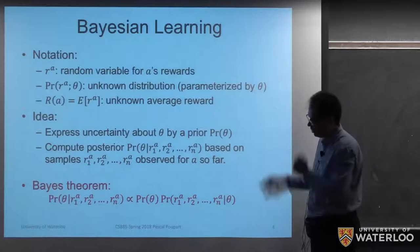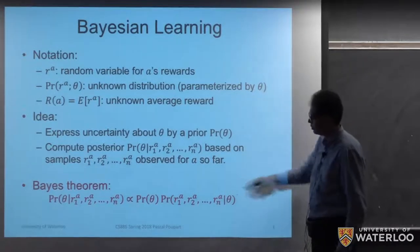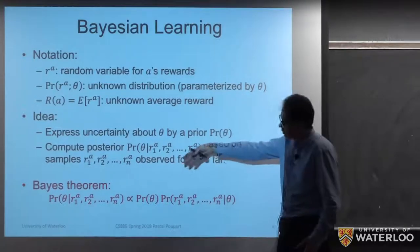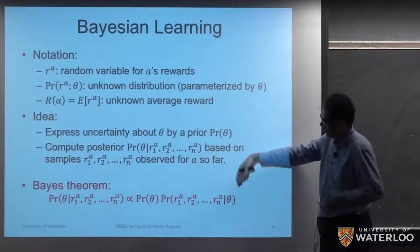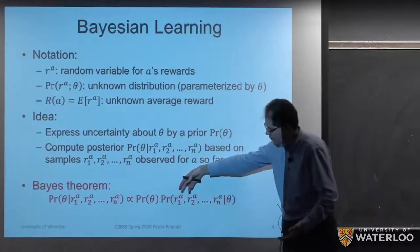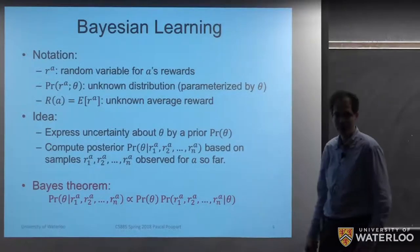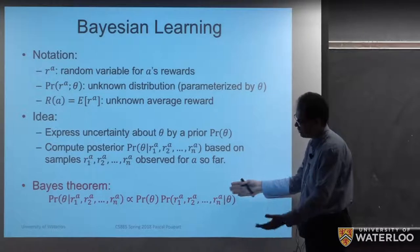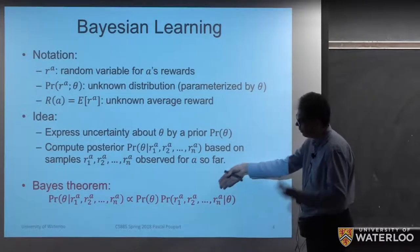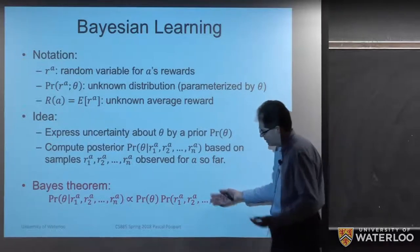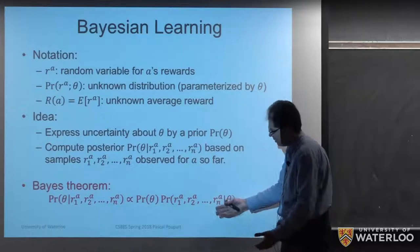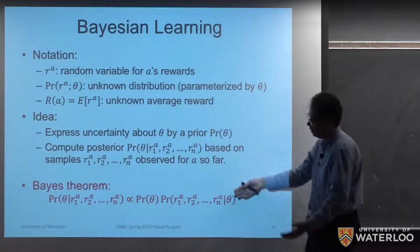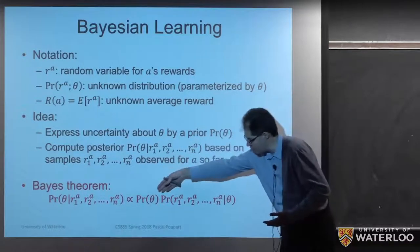To compute this posterior, we use Bayes' theorem — that's why it's called Bayesian learning. Bayes' theorem says that to compute the posterior, we multiply the prior by the likelihood. The likelihood is simply a distribution over rewards obtainable under parameterization theta. So we start with a prior distribution, obtain data, and compute a posterior distribution that is a revised distribution over theta. This posterior is proportional to the product of the prior times the likelihood.